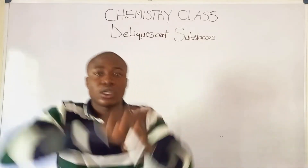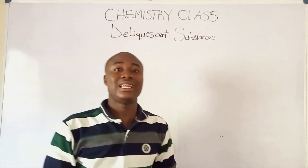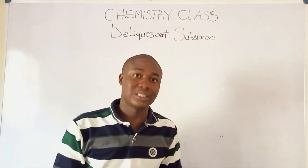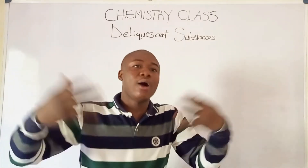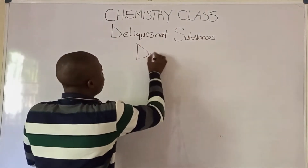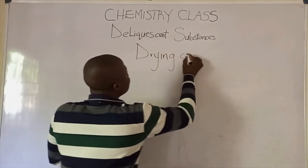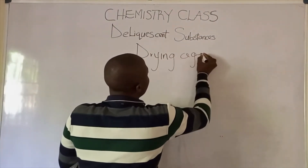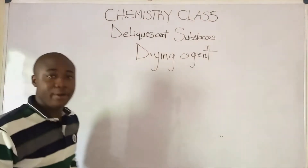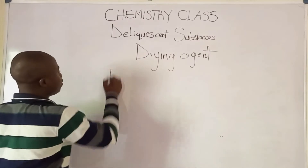Now we have various compounds that serve or act as deliquescent substances, and basically they are also used as drying agents. Deliquescent substances are also used as drying agents. We have various deliquescent substances like the likes of...